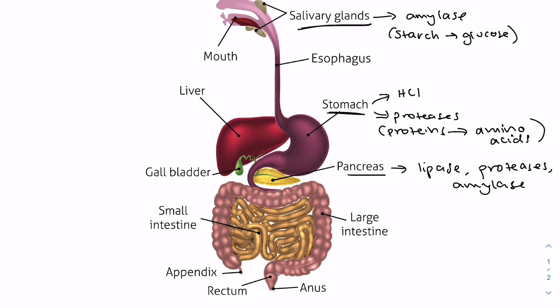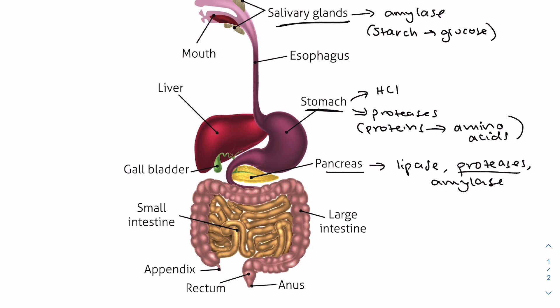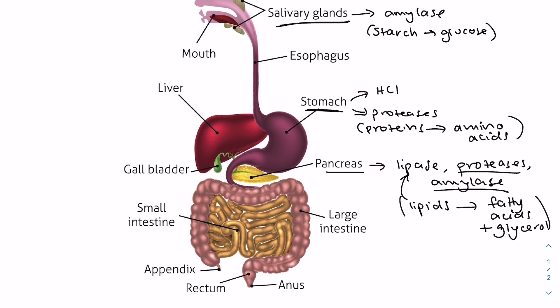Proteases turn proteins into amino acids, amylase turns starch into glucose, and lipase works alongside bile — which we'll also talk about later — to break down lipids into fatty acids and glycerol. Then lastly, we have intestinal glands, and these secrete intestinal juices via the crypts of Lieberkühn in the intestinal wall.